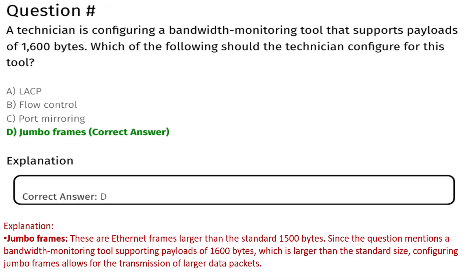Jumbo frames are Ethernet frames larger than the standard 1500 bytes. Since the question mentions a bandwidth monitoring tool supporting payloads of 1600 bytes, which is larger than the standard size, configuring jumbo frames allows for the transmission of larger data packets. That's why the correct answer is D, jumbo frames.